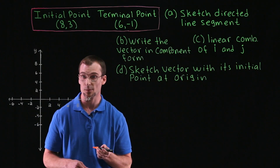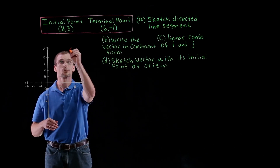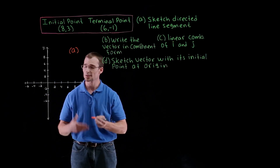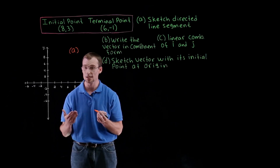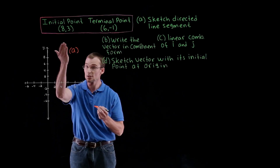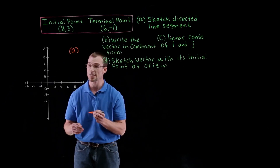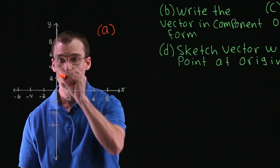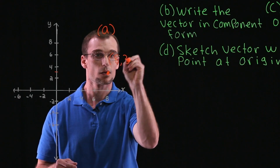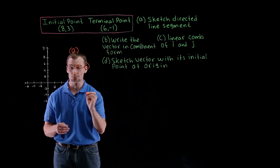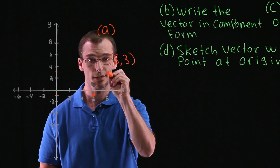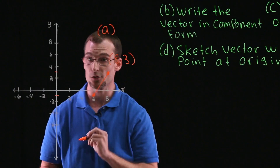So we're going to sketch the directed line segment — this is pretty straightforward. What is a vector? It's a quantity that represents both direction and length, or magnitude, and we can represent that with what we call a directed line segment. We draw that by looking at our initial point as the starting point: coordinates (8, 3), and terminal point at (6, -1).